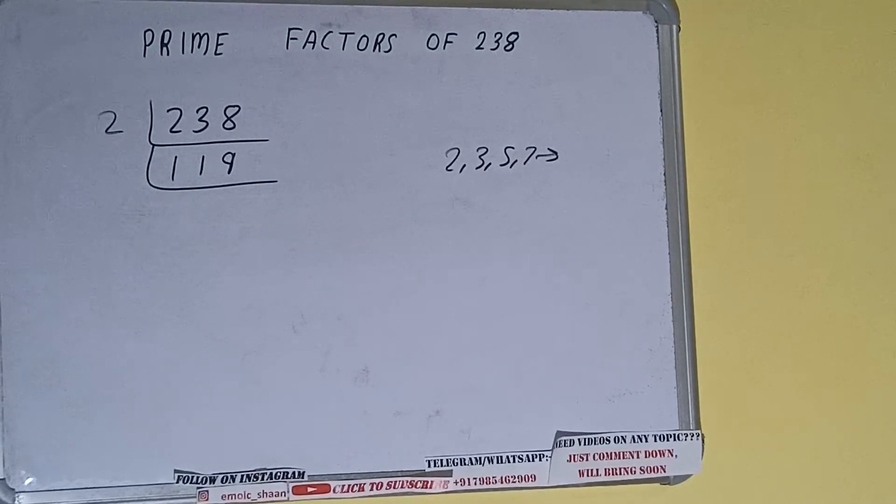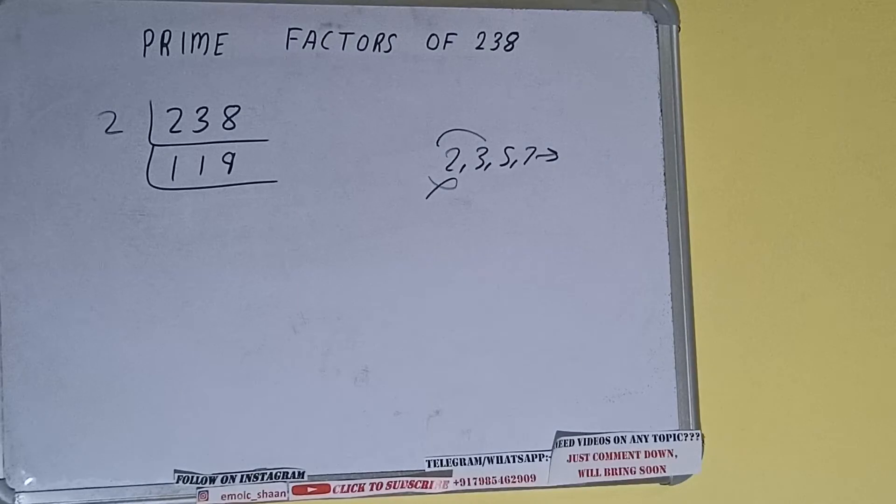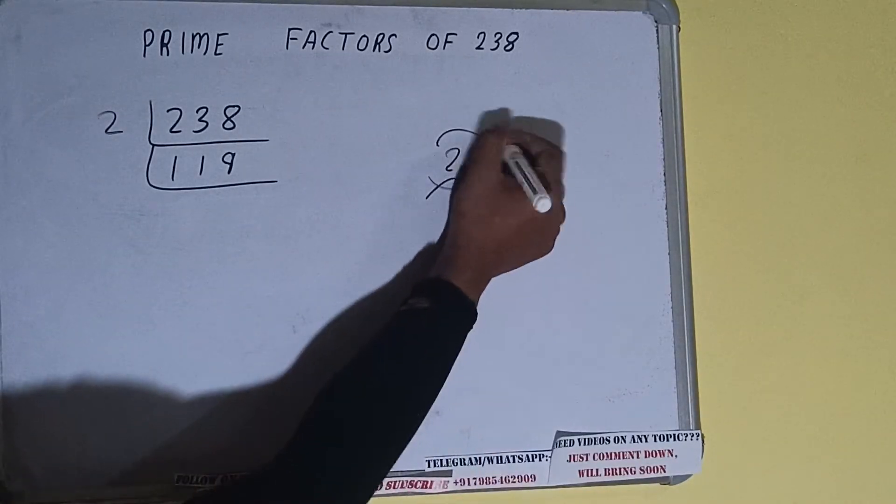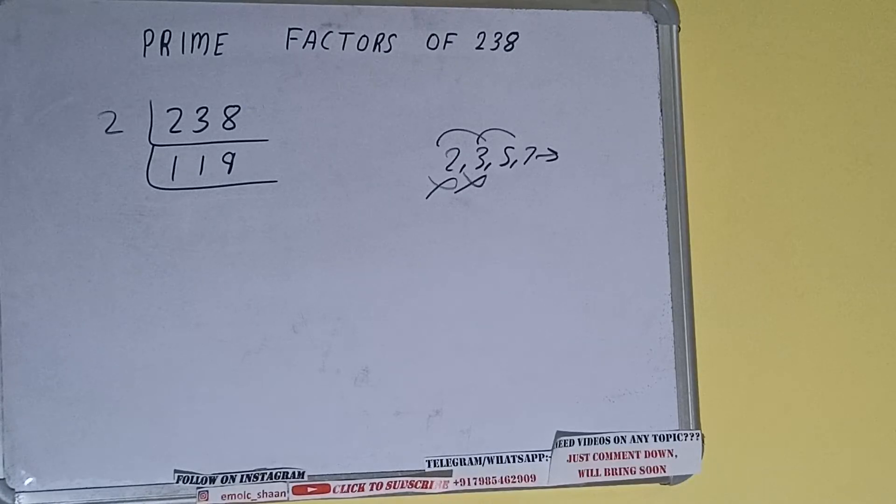We'll check with the next lowest prime number, which is 3. Is 119 divisible by 3? It is not. Let's check with 5. The last digit is neither 5 nor 0, so it is not divisible by 5 either. Let's check with 7.